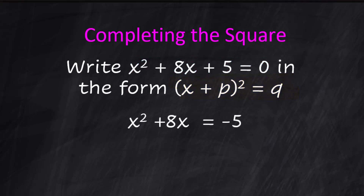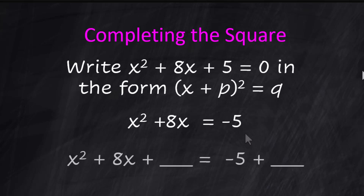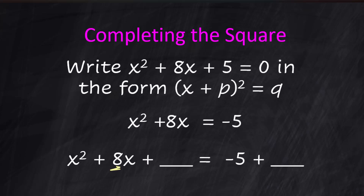So we engineer this to be what we want — we force it to happen. The first step is to subtract the 5 from both sides, giving x² + 8x = −5. Then we make room for a new number: x² + 8x + ? = −5 + that same number. Using the pattern, 8 must be something times 2, so that something is 4. What goes in the blank is 4 squared, which is 16. Since 16 is added to one side, we add it to the other side too.